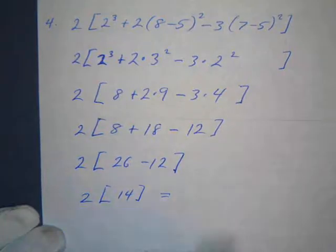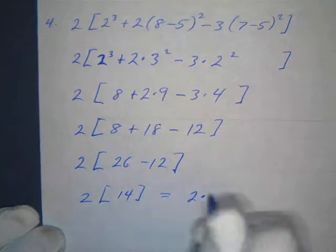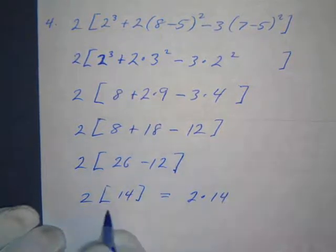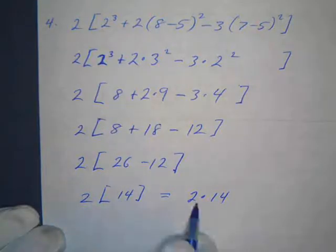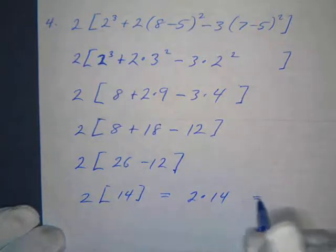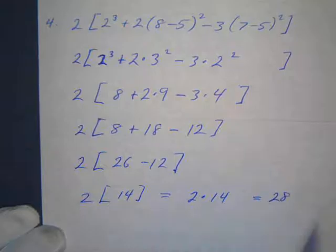And then finally, now I could actually just write this as 2 times 14 if I wanted, or leave it like that. It means the same thing. Either way, we're going to go 2 times 14, and that's going to be 28.